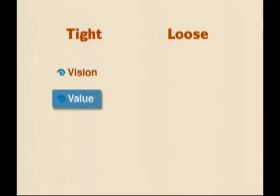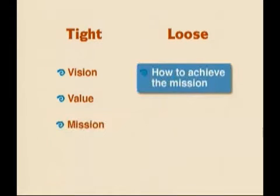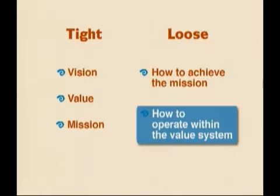In professional learning communities, we try to employ the strategies of being simultaneously loose and tight. There are some behaviors that we're just tight about — that we insist upon. We're tight about the school's vision, the values of the school, the learning mission. And we're loose about how we might go about achieving that mission and operating within the value system of the school. A good way to think about it is that we're tight on the 'what' issues, but very loose and empowering on the 'how' issues.